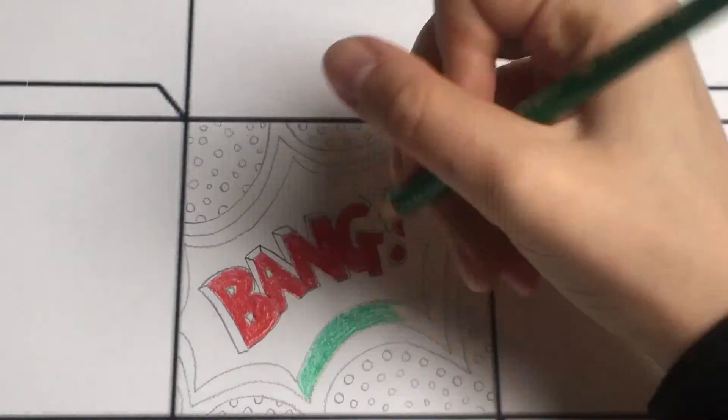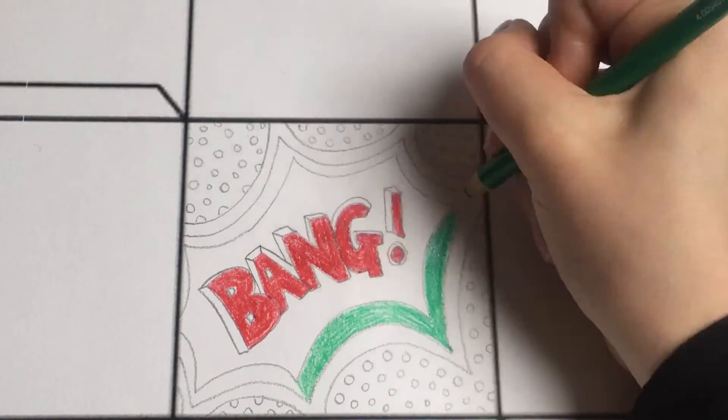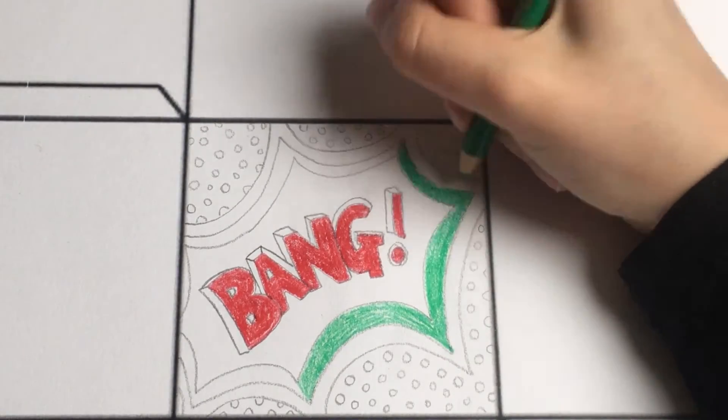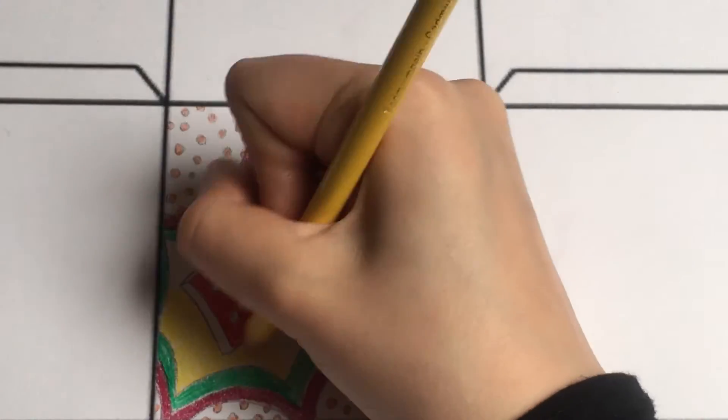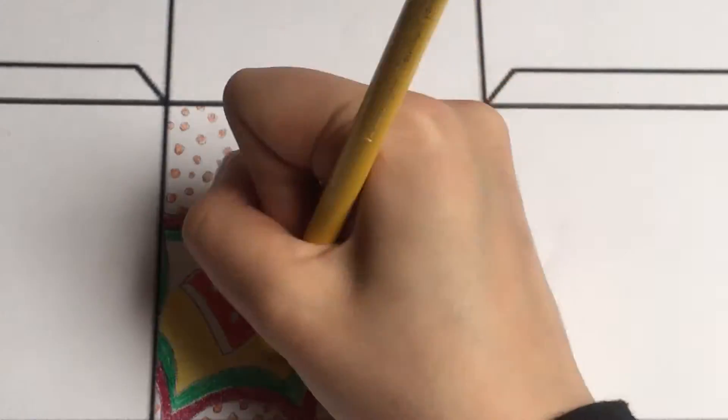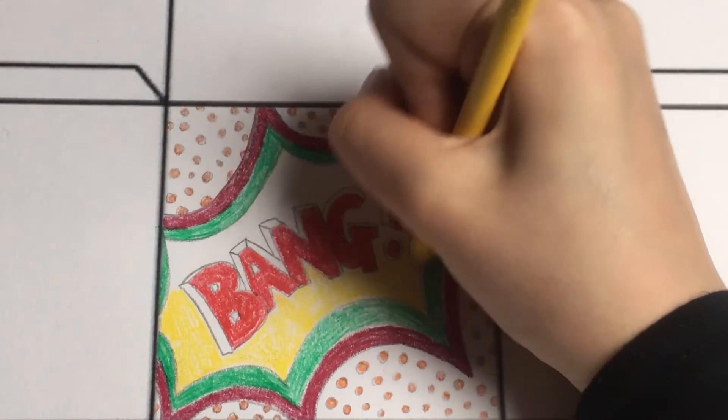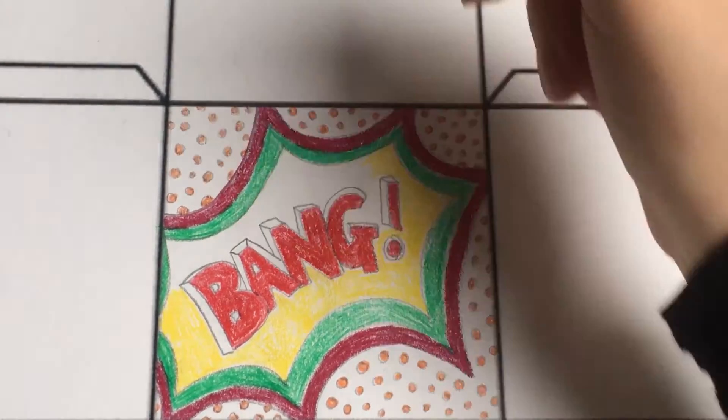Then I picked up a green pencil and I'm going to color in my explosion lines, and I'm making sure that I don't go outside the line so I'm trying to be really neat. I'm doing a background color which is in yellow because I feel that will make the red stand out even more.